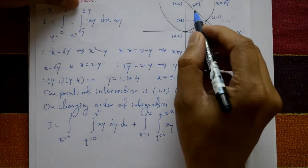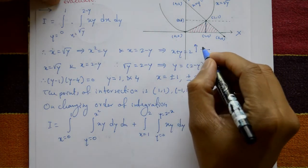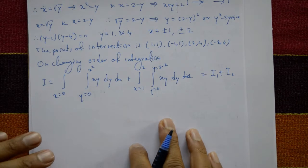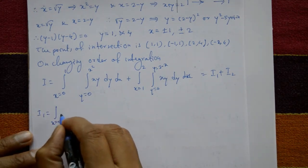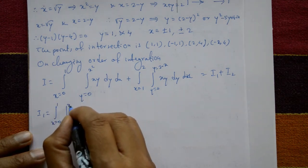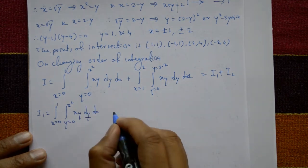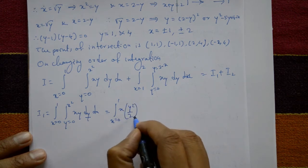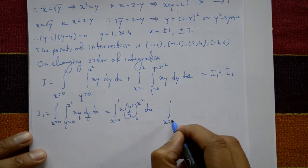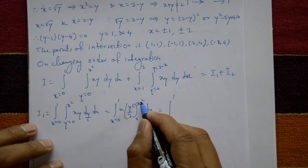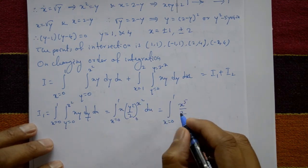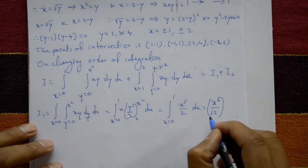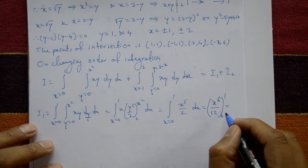Now solve I1. I1 = ∫₀¹ ∫₀^{x²} xy dy dx. Integrating with respect to y: ∫₀¹ x · [y²/2]₀^{x²} dx = ∫₀¹ x · x⁴/2 dx = ∫₀¹ x⁵/2 dx. Integrating: [x⁶/12]₀¹ = 1/12. So I1 = 1/12.